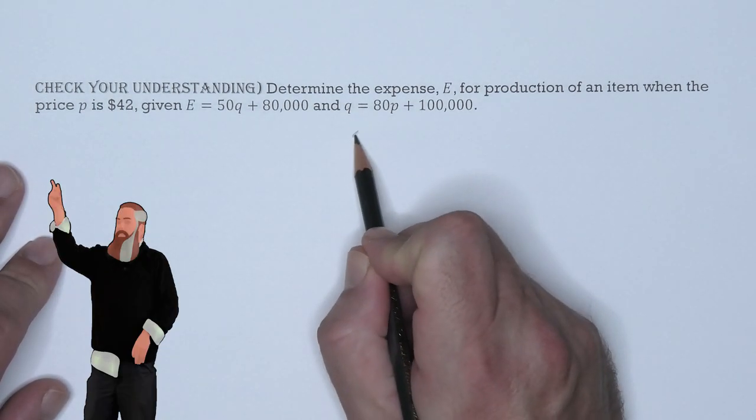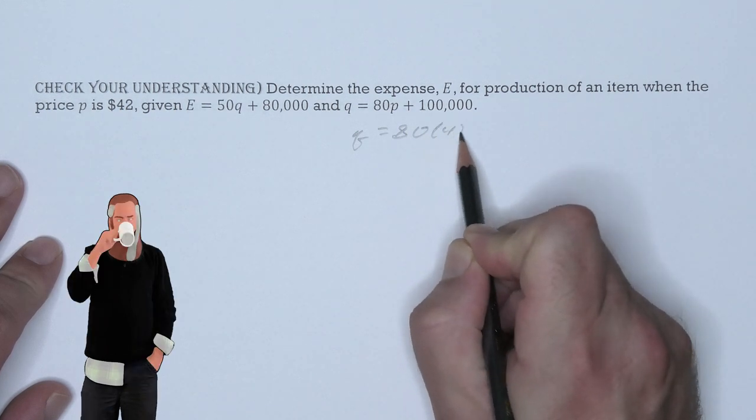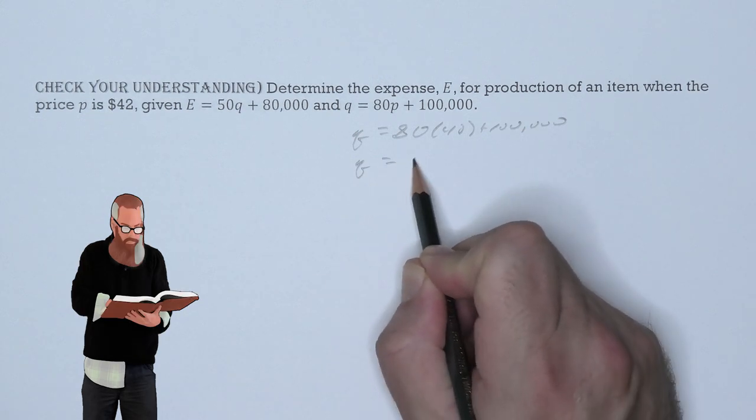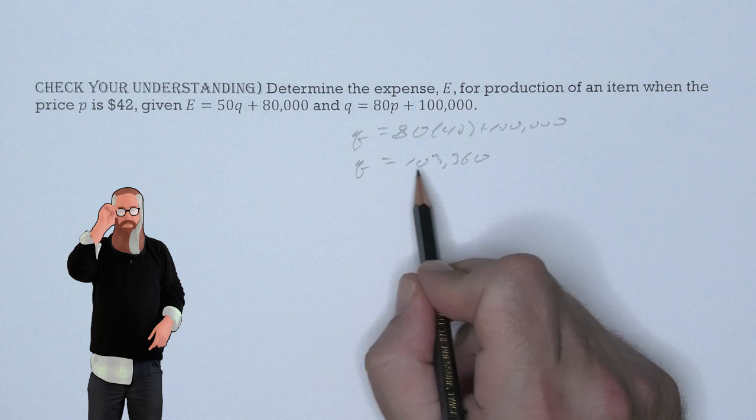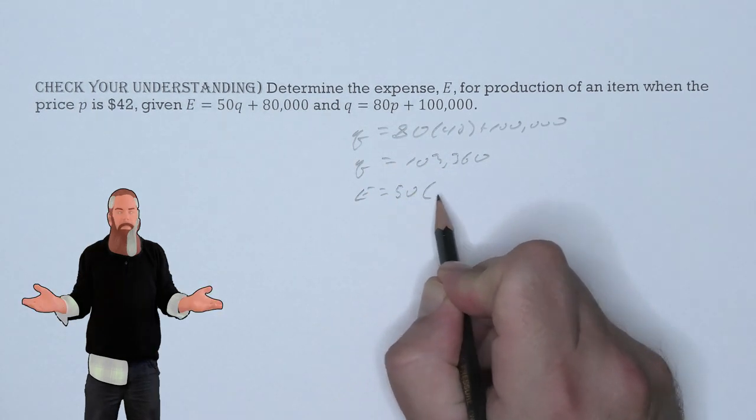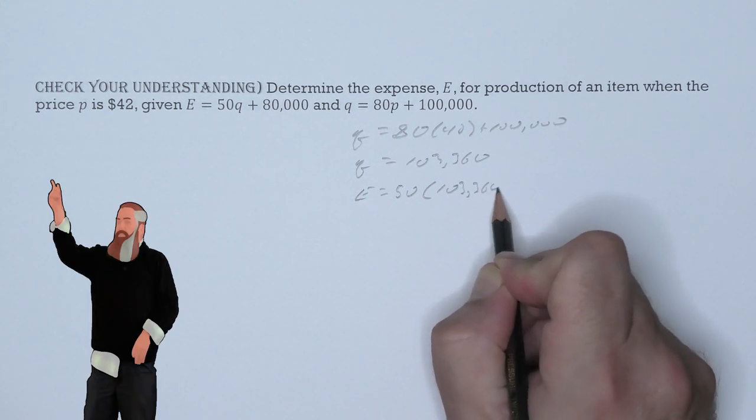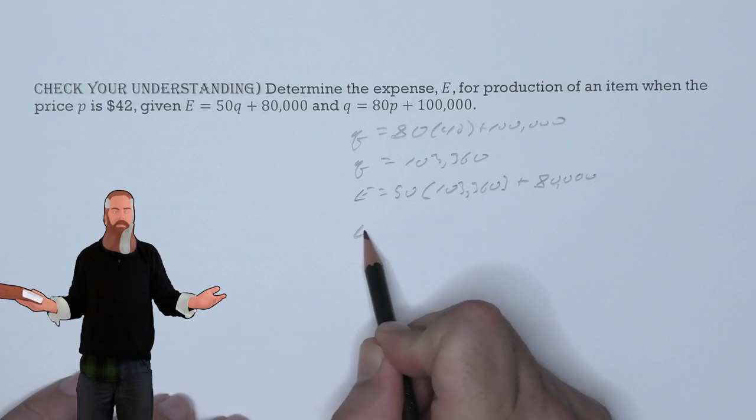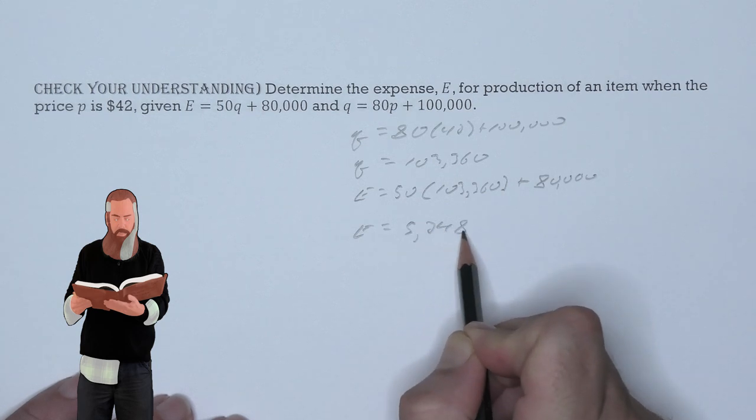I think it would be easier in this case to say that Q is 80 times 42 plus 100,000. This means that Q is 103,360. We now need to put this Q value into the E equation so that E is 50 times 103,360 plus 80,000. This will give us an expense of $5,248,000.